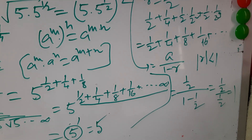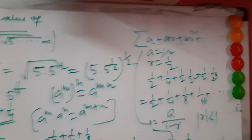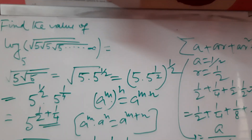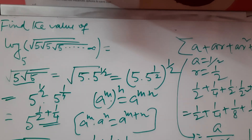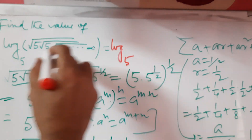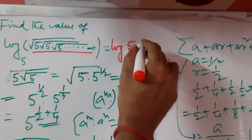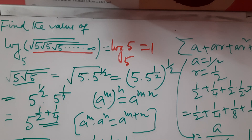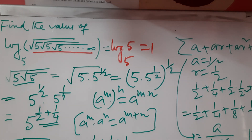Since the inner expression equals 5, we can substitute: log base 5 of 5 = 1, because log_a(a) = 1 where a ≠ 1. Therefore, the value of log base 5 of (root 5 under root 5 under root 5 up to infinity) equals 1.